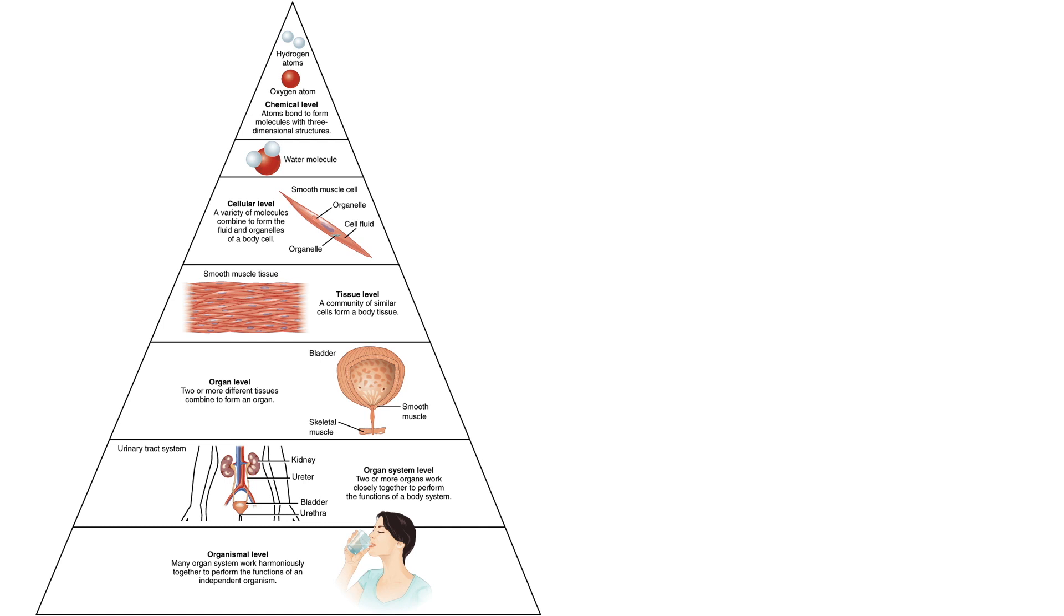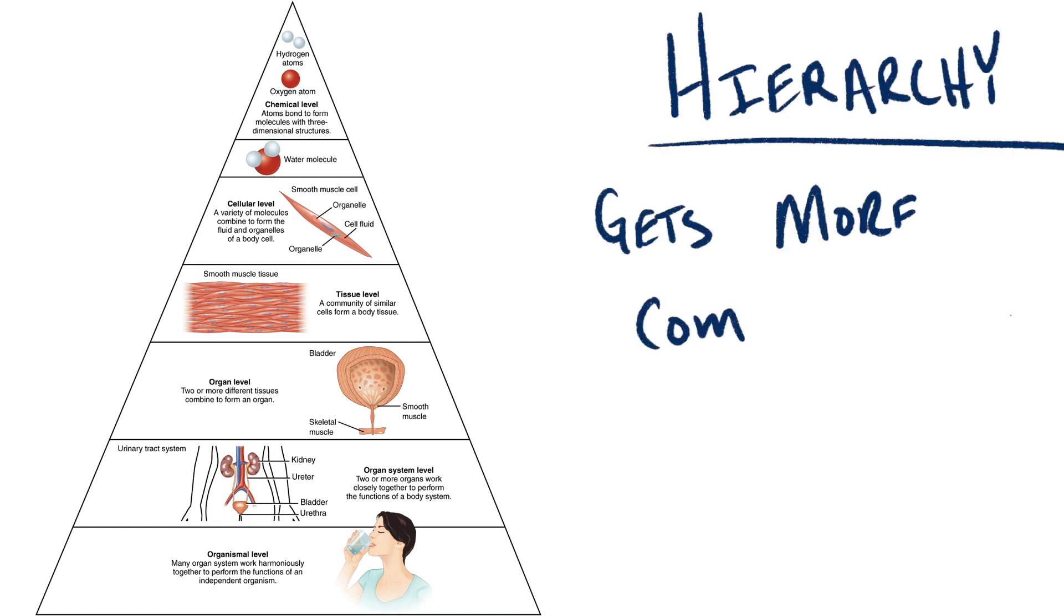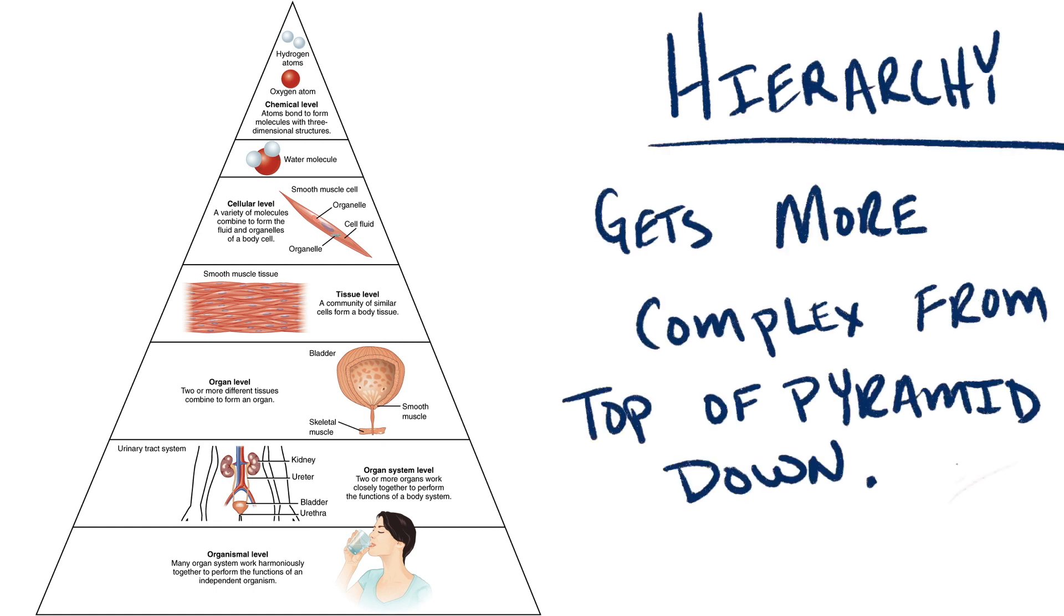They help cells develop through close contact and communication, helping us develop our tissues, organs, organ systems, and ultimately the whole organism. This is what a hierarchy is. Hierarchies get more complex as you move from the top of this pyramid to the bottom.